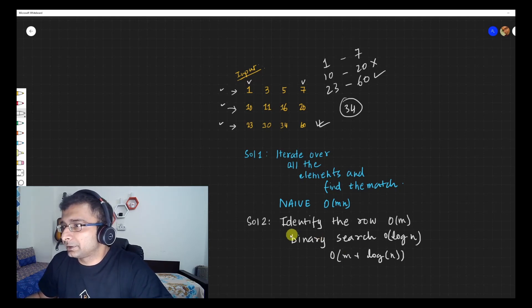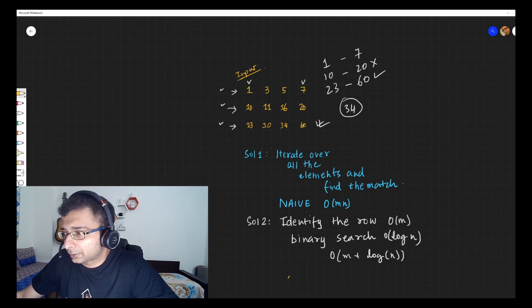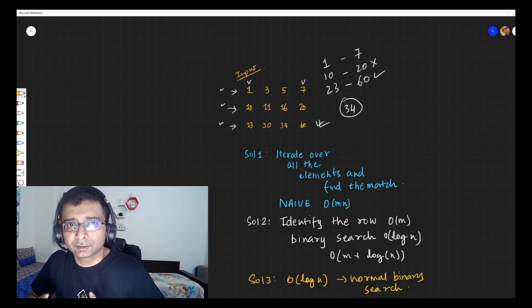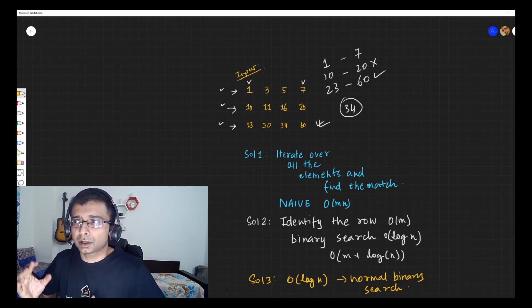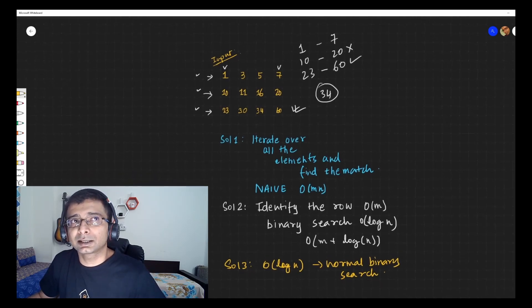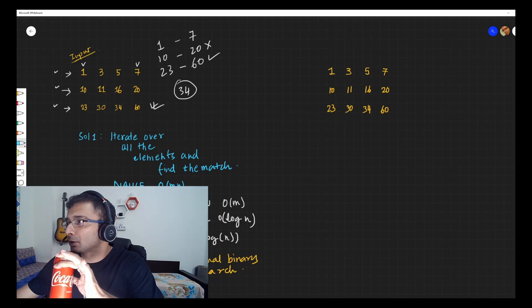This is definitely better than the first solution, but when talking about a sorted search space and finding a particular element, the best case always lies in O(log n). That is just a normal binary search — solution three. But how do we do a normal binary search when we have a two-dimensional array with multiple rows and columns? Let's look at this example in more detail.